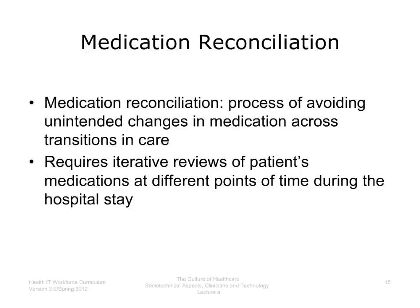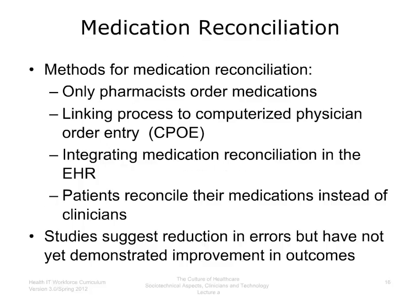How can healthcare systems reduce medication errors? One method is to implement a system of medication reconciliation, which is a process of avoiding unintended changes in medications across transitions in care. Medication reconciliation requires repeated reviews of a patient's medications at the time of admission, at the time of transfer, and at the time of discharge. Many different methods have been suggested. One recommends that only pharmacists be allowed to order medications in the inpatient setting. Another links the medication reconciliation process to computerized physician order entry, or CPOE. A third method integrates medication reconciliation within the user interface as a function of the electronic health record.